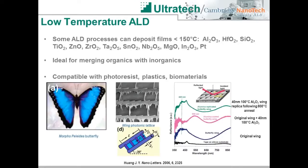Compared to some other deposition technologies, ALD is able to deposit some films at relatively low temperatures. Here I show a list of materials that can be deposited below 150°C, some of which can be deposited down to room temperature. These temperature ranges start to allow classes of substrate materials that may not be coatable by other deposition technologies, including organic substrates, polymer substrates, and items that cannot withstand higher temperature processing due to melting, glass transitions, or other physical limitations.